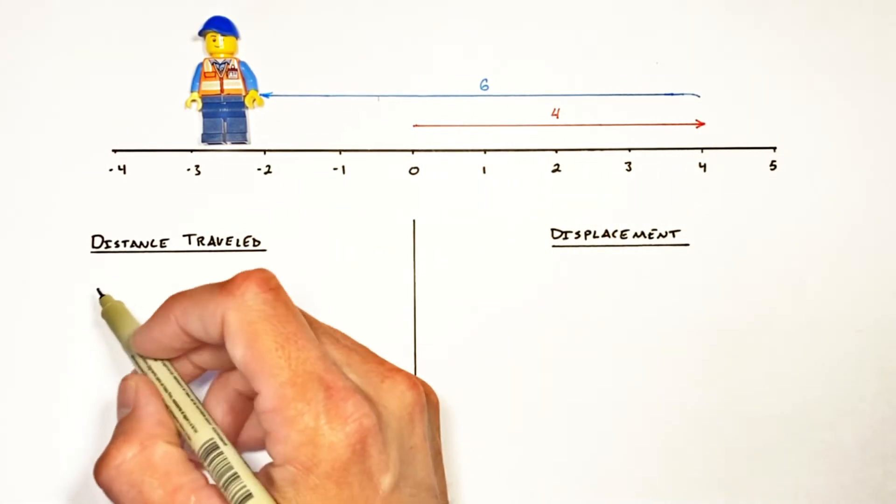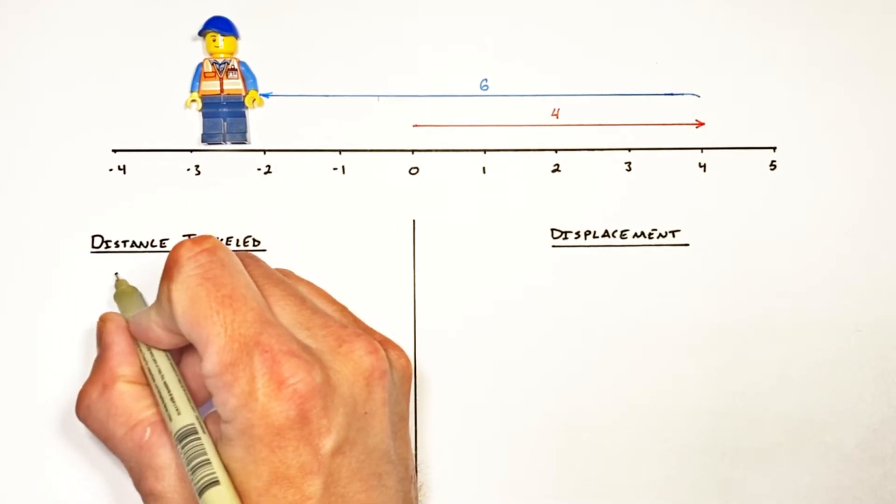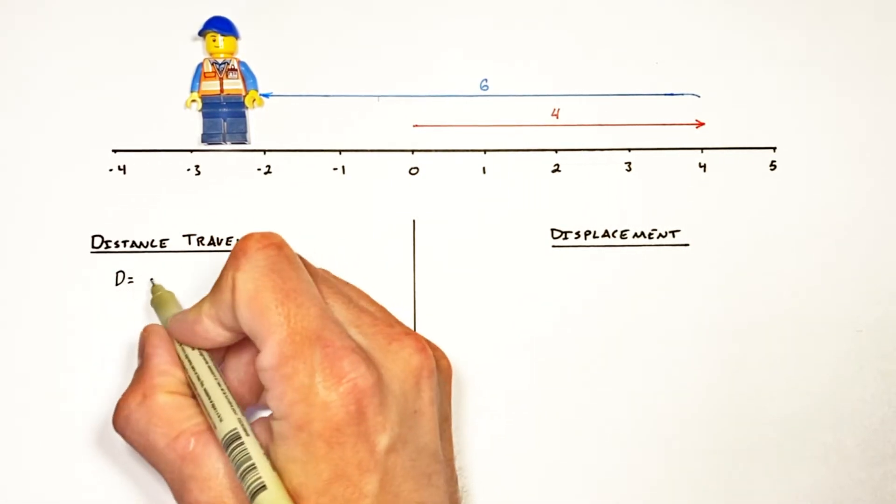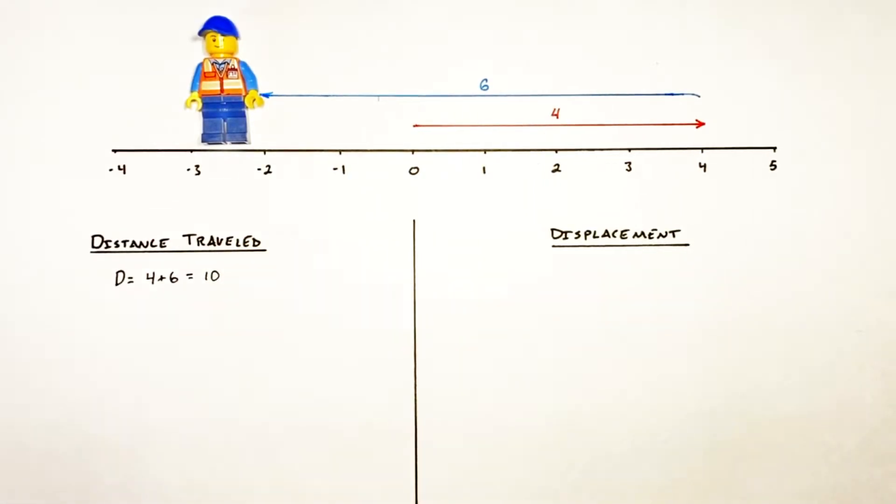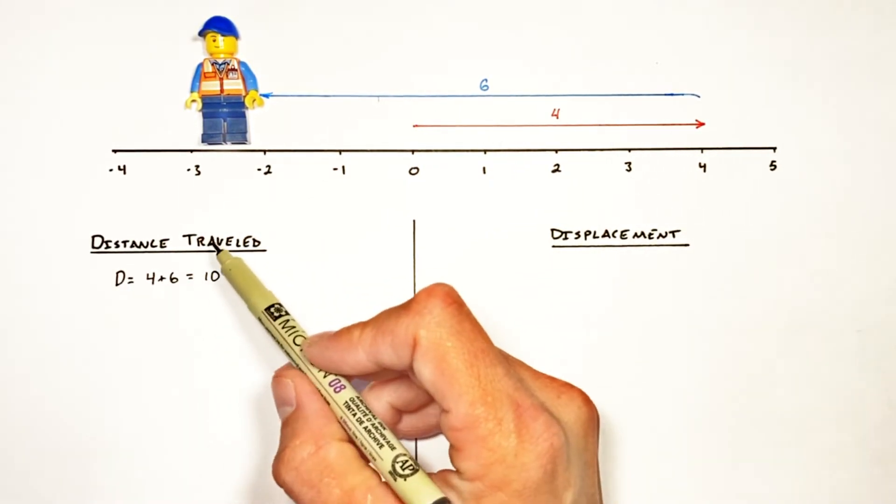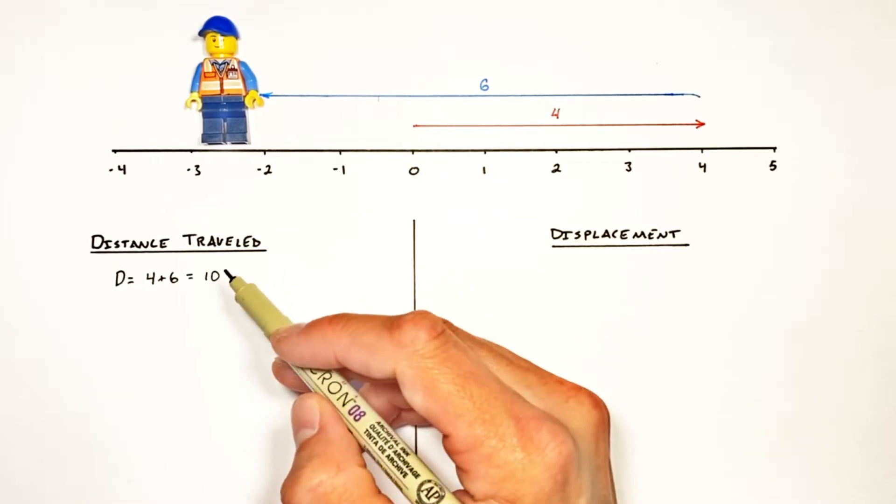So here we'll just say his distance traveled, I'm going to call that capital D, was equal to four plus six. So that's ten. Now the thing about distance traveled is that direction does not matter.